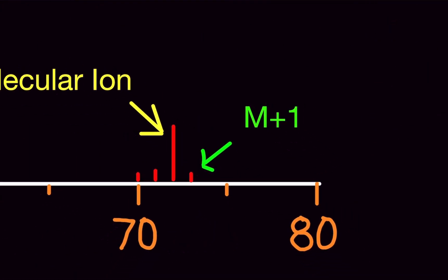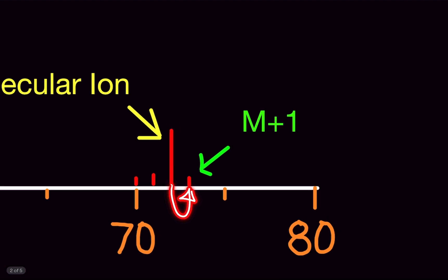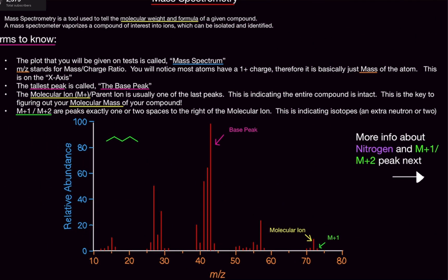The space right next to the molecular ion is the M+1 peak, and the space right after that is M+2. These are very helpful for recognizing if there is any chlorine or bromine in your compound of interest.